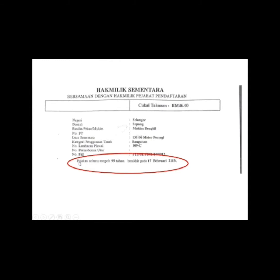If it is a leasehold title, you will see down here it will be written: 'Pajakan Selama Tempoh 99 Tahun Berakhir Pada,' followed by the expiry date. Now, if you look into Malaysian property, there are two types of leaseholds: there are 60 years, there is 99 years, and there is also 149 years. The other way to identify leasehold is they will have something written under 'Sekatan-Sekatan Kepentingan.'